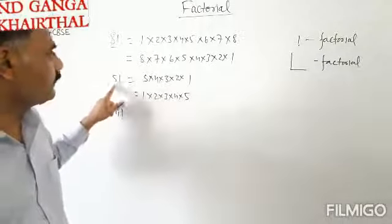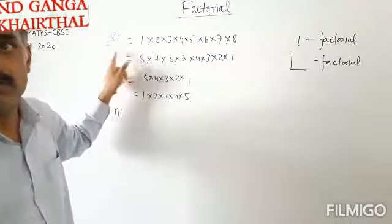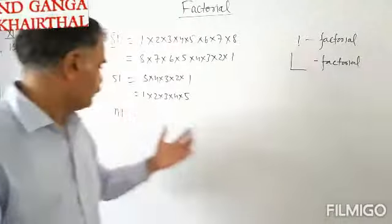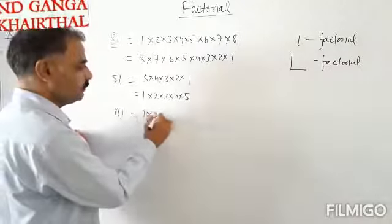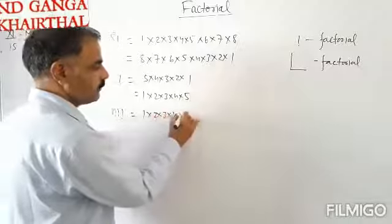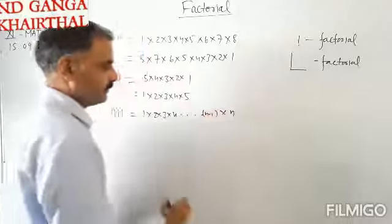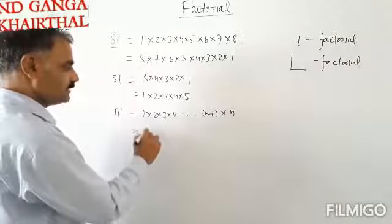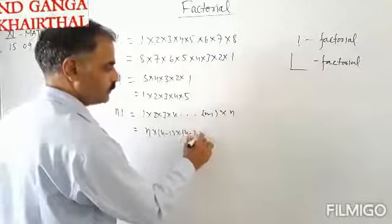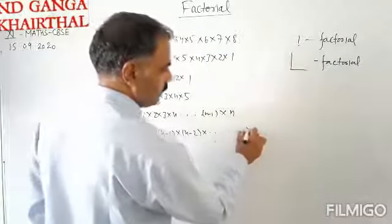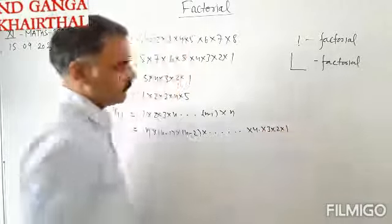If we put this symbol on the right side, then we read this as 5 factorial or 8 factorial. So factorial n can be written as 1 into 2 into 3 into 4 and so on up to n, which is n minus 1 into n. Or this can also be written as n into n minus 1 into n minus 2 and so on, multiplied by 4, 3, 2, 1.